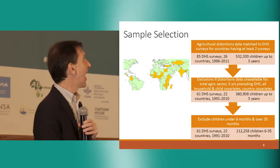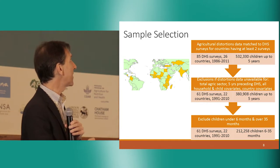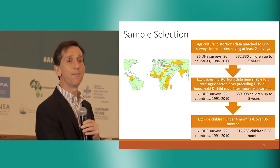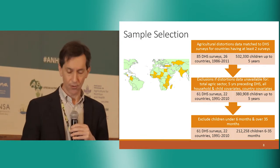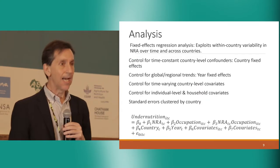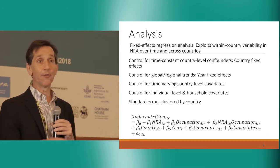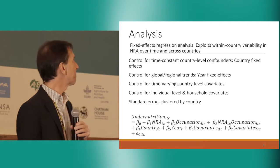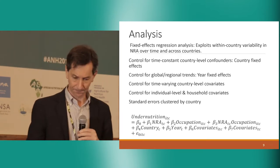She's working with the universe of all DHS data — something like half a million children across 26 countries from the period of economic reforms in the 1980s, with most data coming from the 1990s and 2000s as those reforms played out over time. The analysis is a state-of-the-art public health nutrition regression framework, with a fairly straightforward approach to controls and mixed modeling.